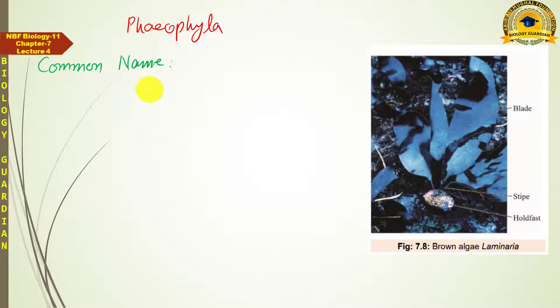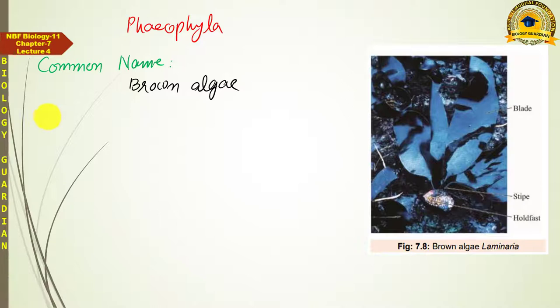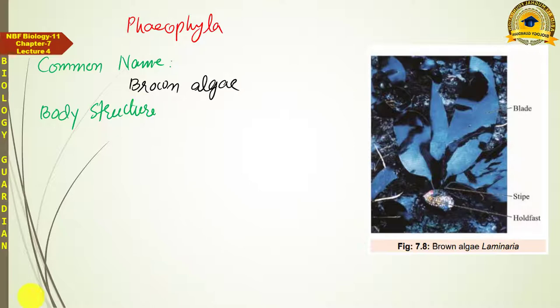Compared to the previous three groups, Brown algae differ in that they are exclusively multicellular. All members of Brown algae have a multicellular body structure — unlike the unicellular body structure seen in the first three groups.